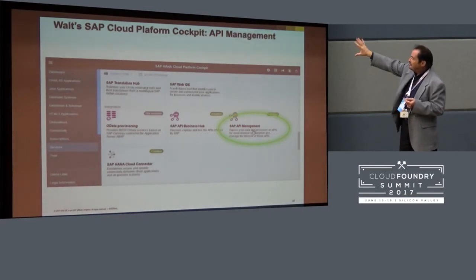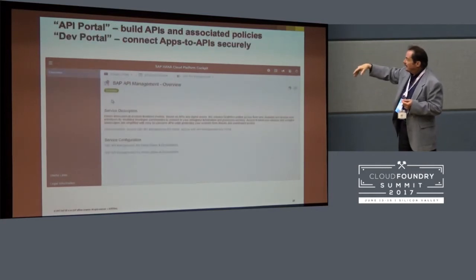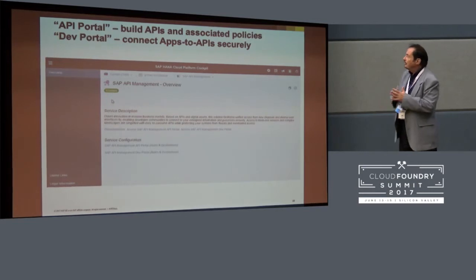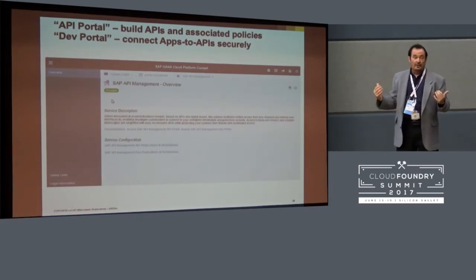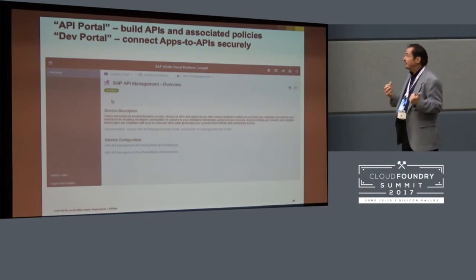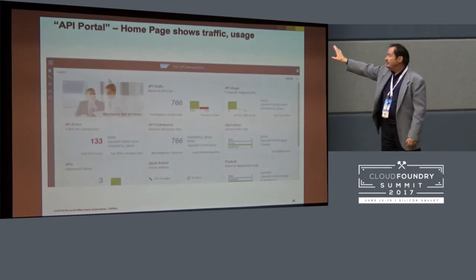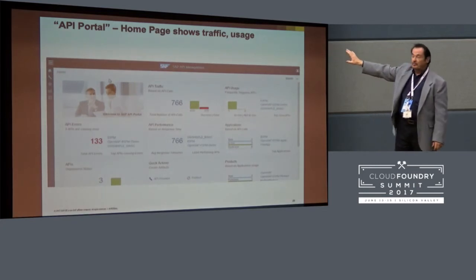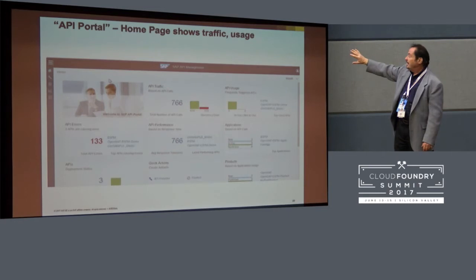He goes to API management — this is one of the many services in SAP Cloud Platform — and it has two flavors. There's a portal for people who are building APIs and another portal for people who are consuming APIs in applications. First, we have to build the API. He sees statistics on what APIs have been built already in the system, how much they're being used, and who the big users are.